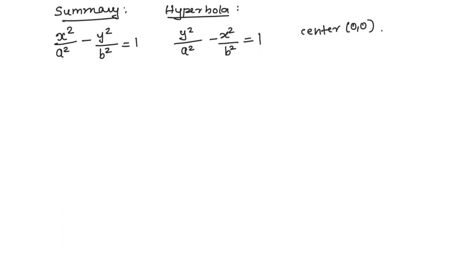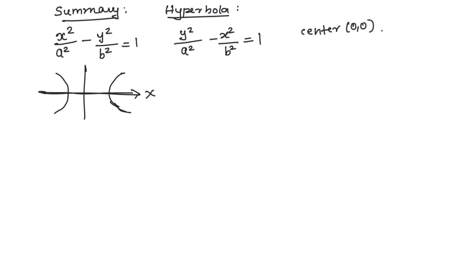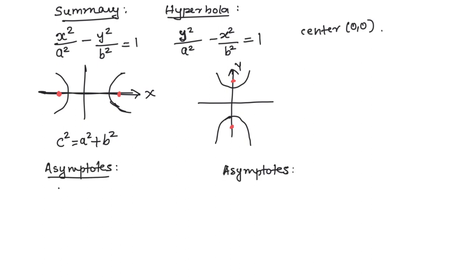In this section you learned the standard forms of a hyperbola whose center is at (0, 0). It does not matter whether a is bigger or b is bigger. If the equation starts with a positive x² term, the transverse axis is the x-axis and the asymptotes are y = ±(b/a)x. If the equation starts with a positive y² term, the transverse axis is the y-axis and the asymptotes are y = ±(a/b)x. In both cases, the focus is found using c² = a² + b².